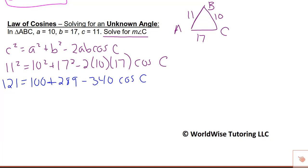When I was warning you about how the last expression in this equation is all being multiplied together, what I was warning you against is don't do 100 plus 289 minus 340. That 340 is stuck to that cosine of C, so we can't subtract it. We can combine these two together, however.